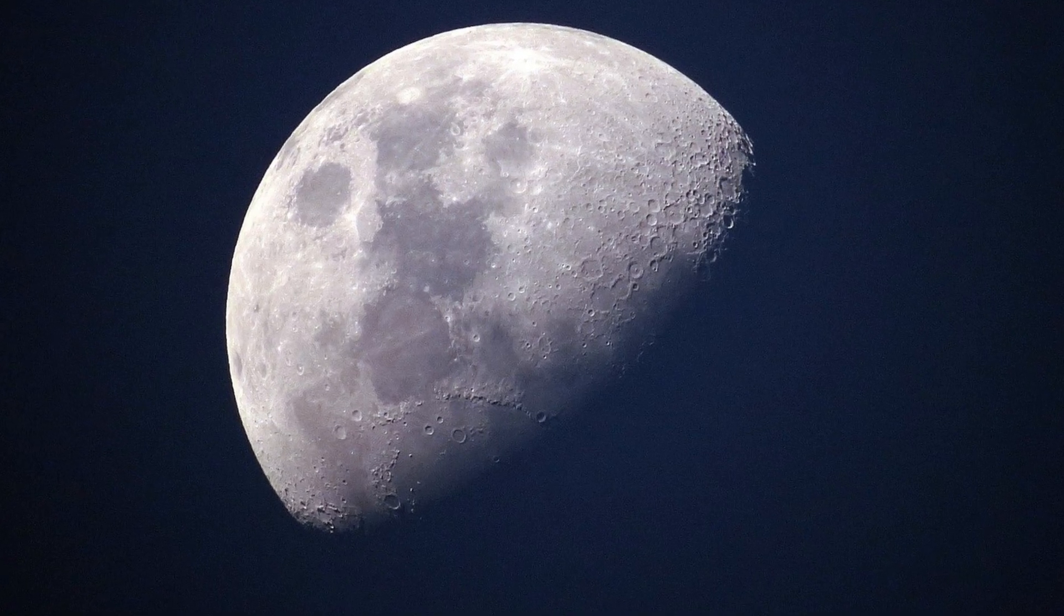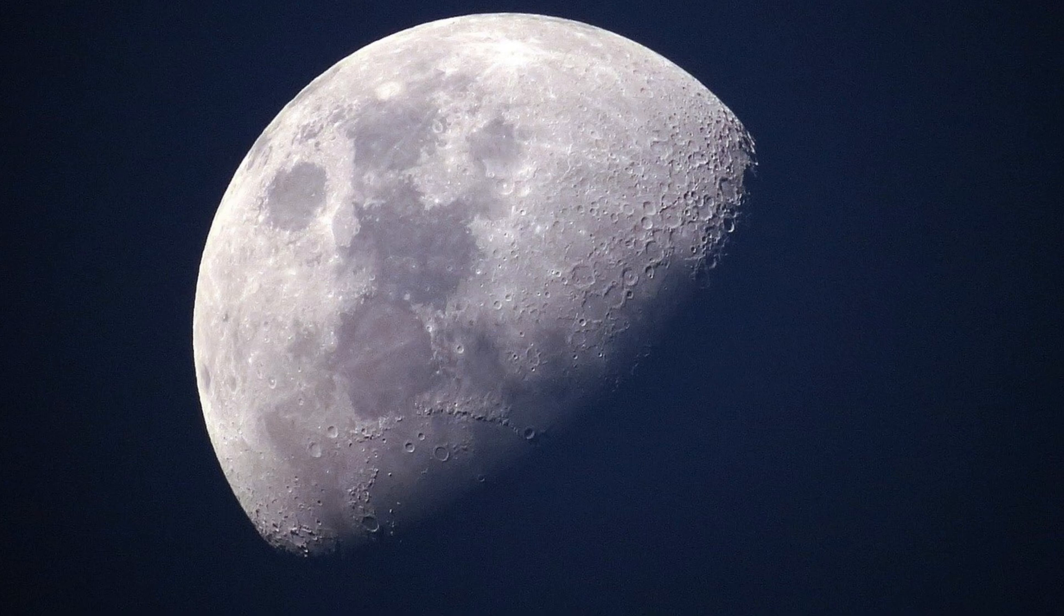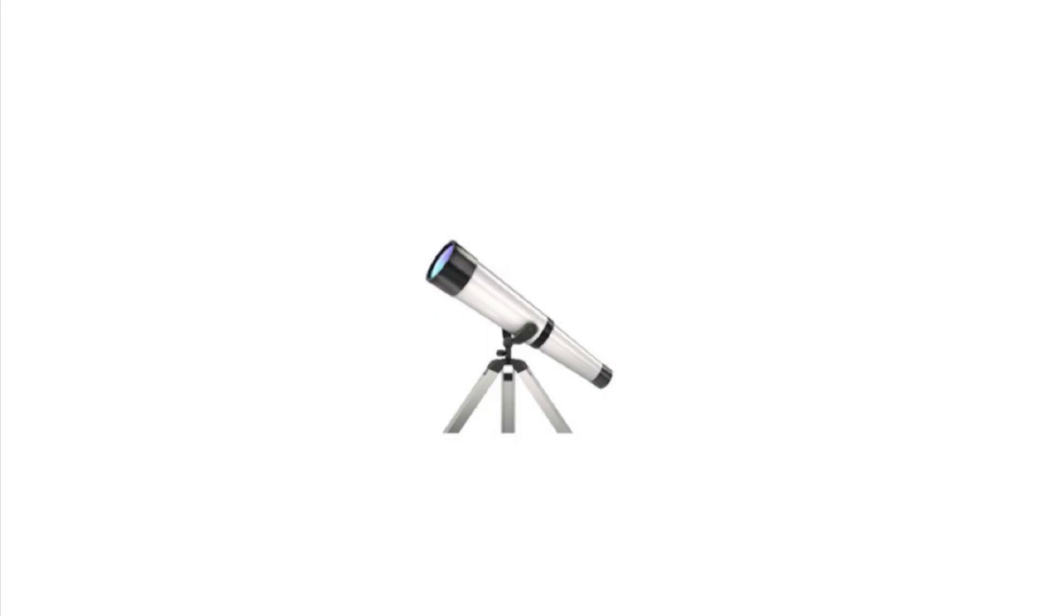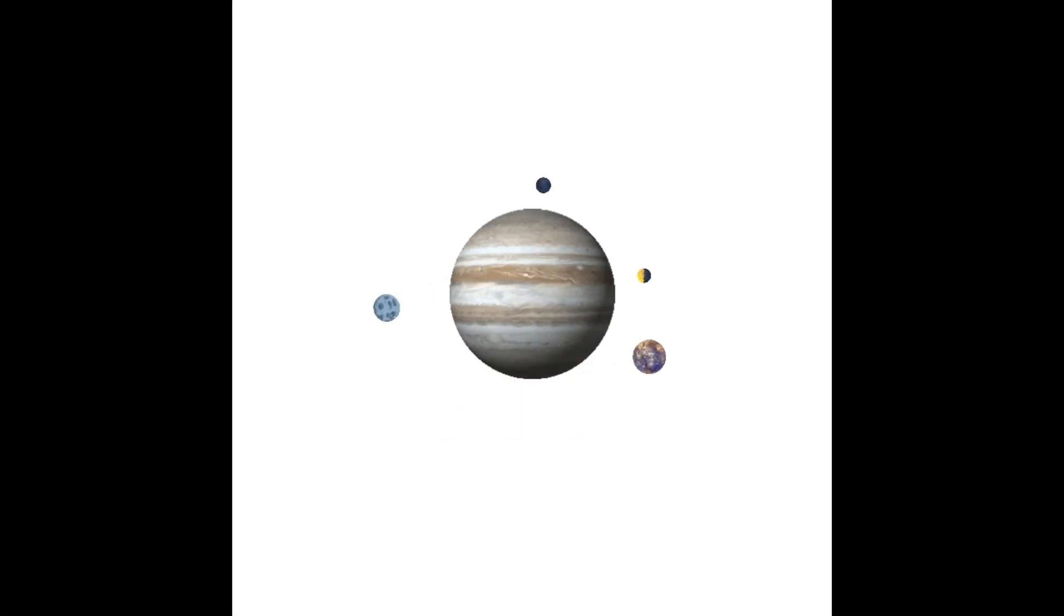According to Aristotle, everything in the heavens must be perfectly spherical. Galileo turns his telescope towards Jupiter and he discovers four moons orbiting Jupiter. And then he concludes if Jupiter can be a center of motion, why not the Sun?